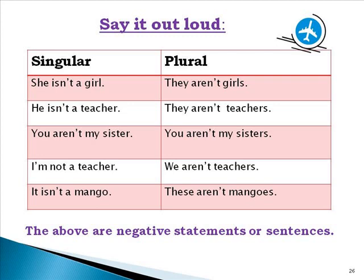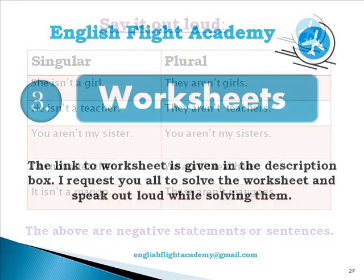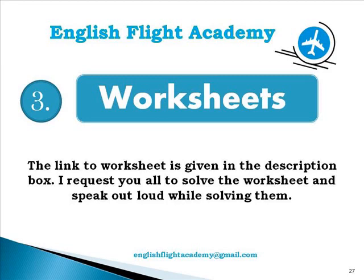Now negative statements with contractions — say it out loud. She isn't a girl. They aren't girls. He isn't a teacher. They aren't teachers. You aren't my sister. You aren't my sisters. I am not a teacher. We aren't teachers. It isn't a mango. These aren't mangoes. Once again: she isn't a girl, they aren't girls, he isn't a teacher, they aren't teachers, you aren't my sister, you aren't my sisters, I am not a teacher, we aren't teachers, it isn't a mango, these aren't mangoes.